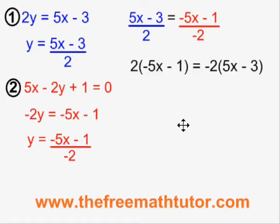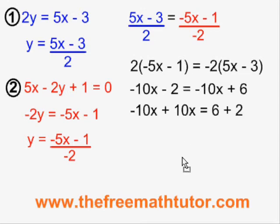Now I multiply across the brackets, and I end up with negative 10x minus 2 equals negative 10x plus 6. Getting the x terms together on one side and the constant terms together on the other side, I end up with negative 10x plus 10x equals 6 plus 2. Negative 10x plus 10x equals 0, so my next line is 0 equals 8.